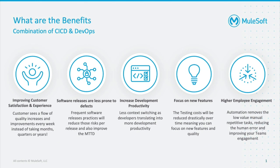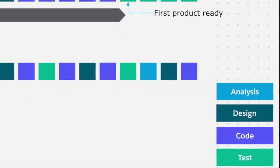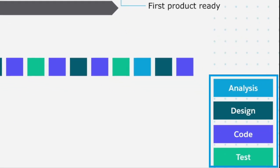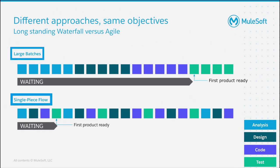Those are the main benefits, but now let's understand the problem we're trying to address with three different scenarios. Let's think about the waiting times and how dangerous they can be for the business. In this example you can see the software development lifecycle. In a very simplistic way you can see four stages — analysis, design, code, and test — and on screen you have the large batch and the single piece flow. For this exercise you need to deliver a project and choose between those two. In the first case you do analysis, then design, then code, then test. It will take a long time — many months or maybe even years.